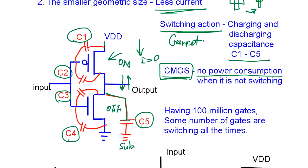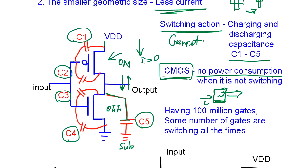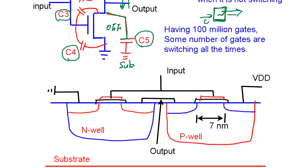If you have like a hundred million gates on one single chip, there are always some gates that are switching because the clock is running and the clock is going to affect many gates. The power consumption of the CMOS chip is actually this switching transient current to charge and discharge those capacitors.